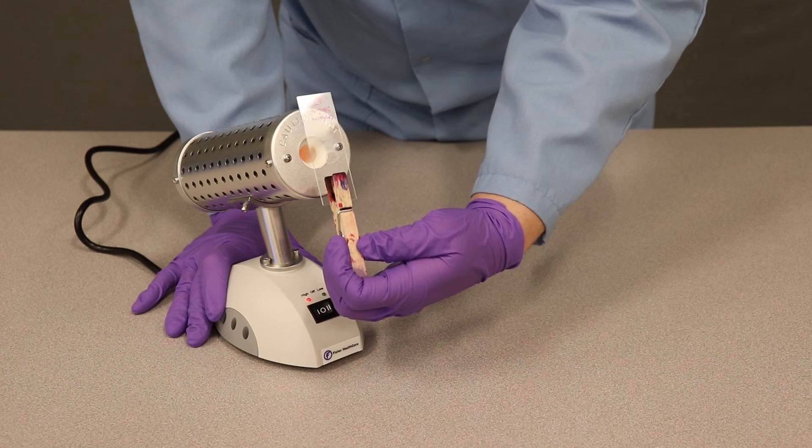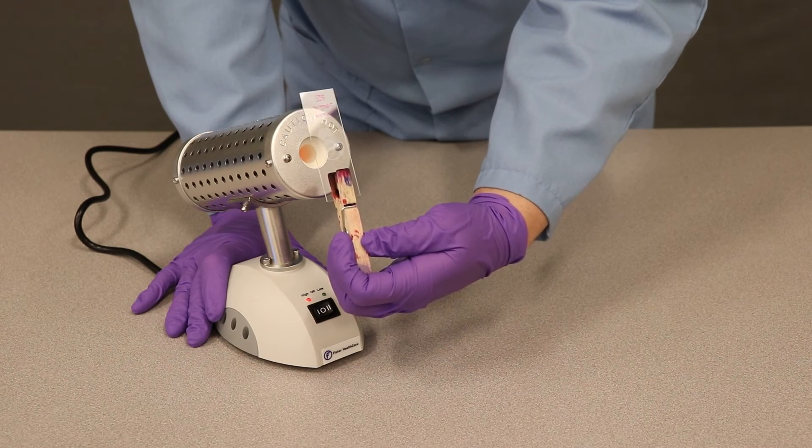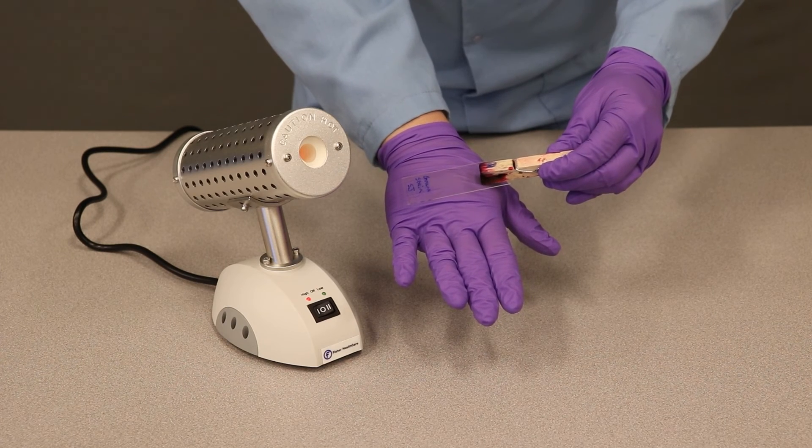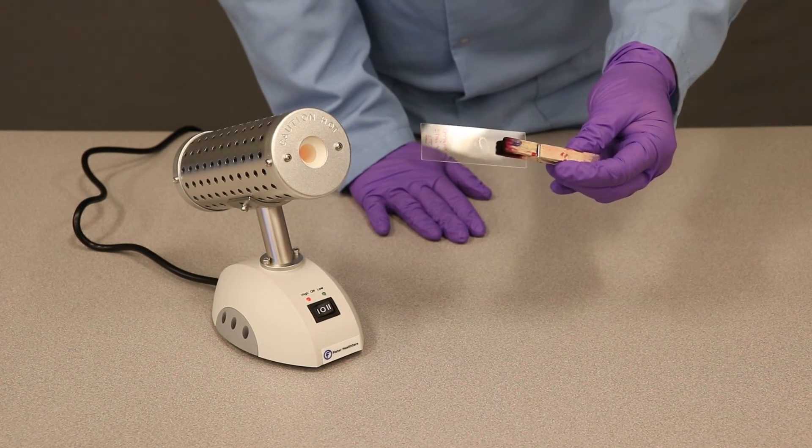When you think enough time has gone by, like when you heat fix with a Bunsen burner, you can place it gently on the back of your hand. If it's hot but not burning, then you know it's been properly heat fixed.